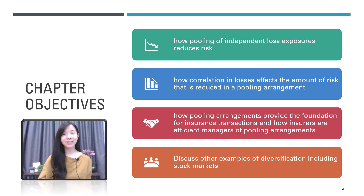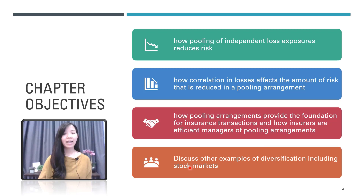So let's learn more about pooling arrangement. In this chapter, we shall look at how pooling of independent loss exposures reduces risk, how correlation in losses affects the amount of risk reduced in a pooling arrangement, how pooling arrangements provide the foundation for insurance transactions, how insurers are efficient managers of pooling arrangements, and we shall also discuss other examples of diversification including the stock market.